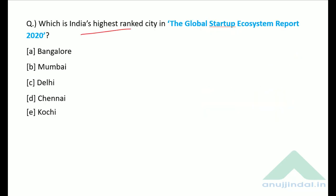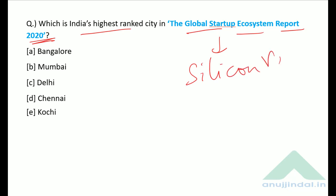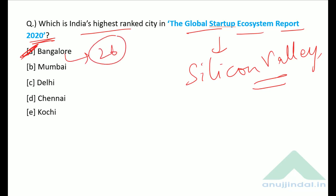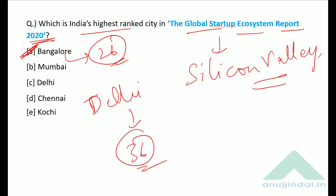Which is India's highest ranked city in the Global Startup Ecosystem Report 2020? The number one globally is Silicon Valley. From India, Bengaluru is ranked first with an overall rank of 26, followed by Delhi at overall rank 36.